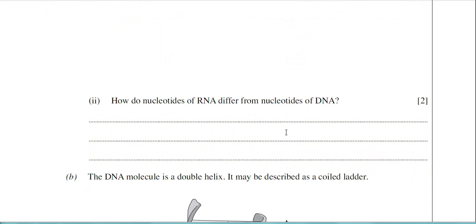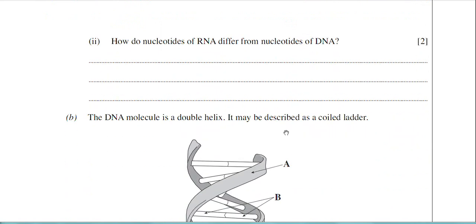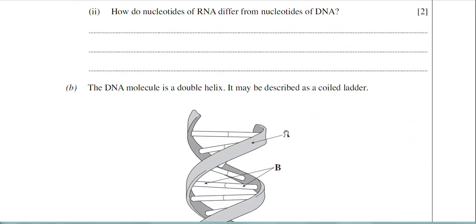On to part two. How do nucleotides of RNA differ from nucleotides of DNA? It's a two marker. This is just basic recall of facts. One immediate difference is that RNA has the ribose sugar and DNA has the deoxyribose sugar. That will get you one mark.